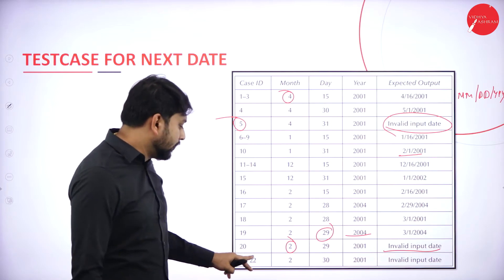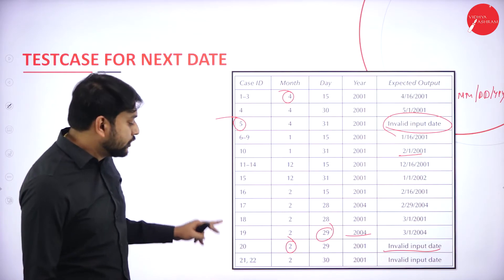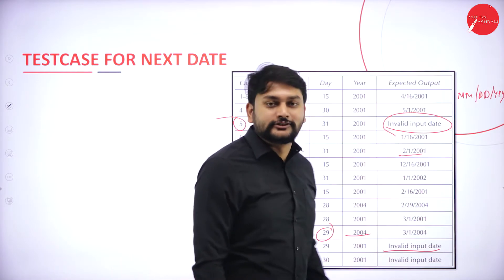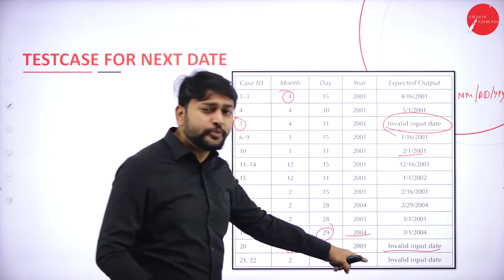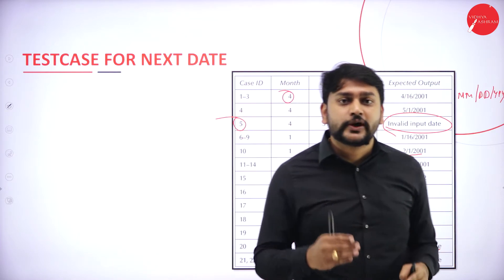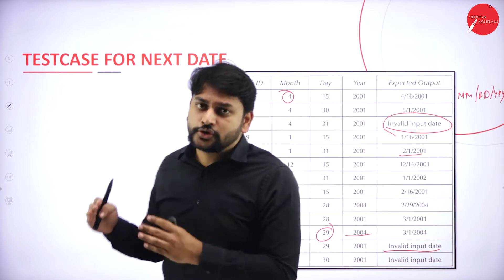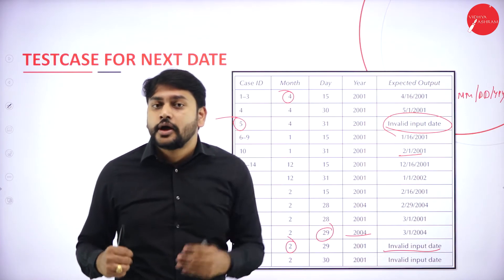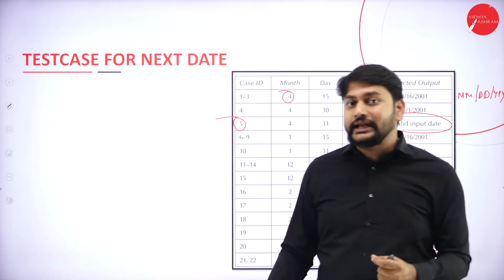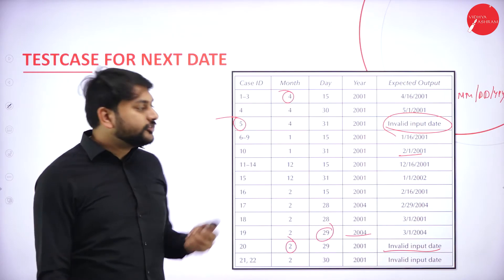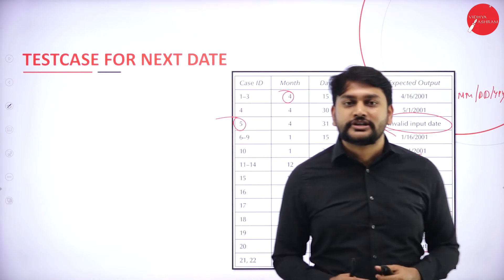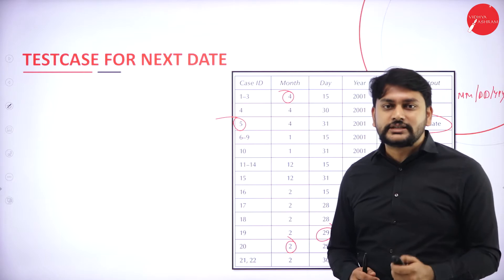For rule numbers 21 and 22: month = 2 (February), and since February cannot have 30 days, the output will be invalid input date. This covers the detailed test cases corresponding to rule numbers 1 through 22, which were discussed in the previous sessions on the decision table.